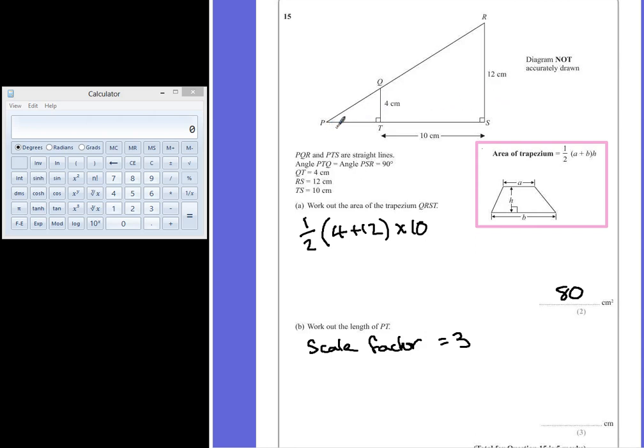Which means that PT is a third of the size. PT is equal to a third of PS. Now we know that TS is 10cm, and PT to S must be the remaining two thirds of our line PS. So if 10 is equal to 2 thirds of PS...